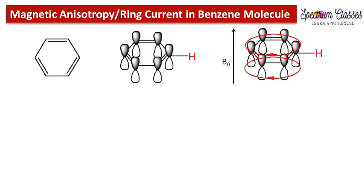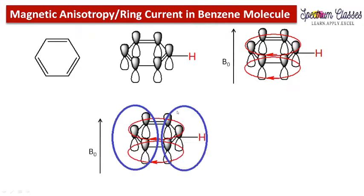This circulation of electrons takes place perpendicular to the applied external magnetic field, which is why the molecule is oriented in this way. The circulation of electrons produces an induced current, and the situation resembles a current-carrying loop, so there are also induced magnetic field lines — represented here by the blue lines.